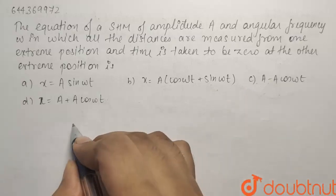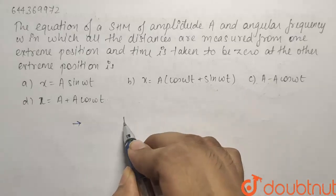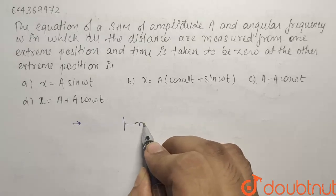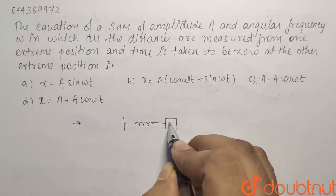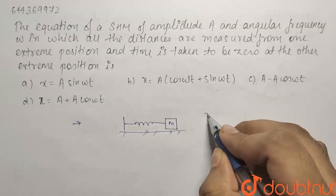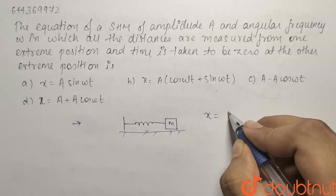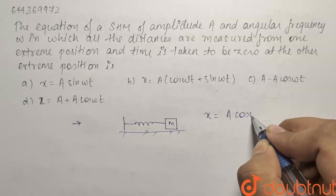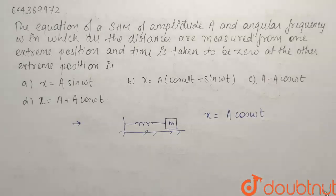We have been given an SHM where we are seeing everything with respect to the extreme point. For a normal SHM, we know that the equation X is given by A cos omega t or A sin omega t.